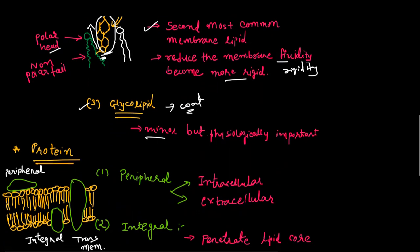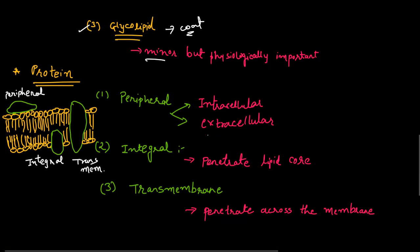Now we are going to focus on protein types, which are the major types of protein found in this membrane. There are three types: peripheral, integral, and transmembrane proteins.